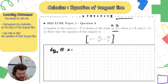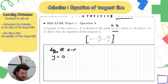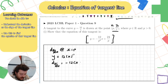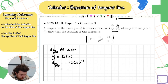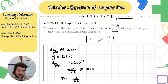Rewriting: y = 12x⁻¹, so dy/dx = −12x⁻² which equals −12/x². Evaluating at x = p, my slope is −12/p².